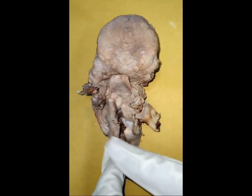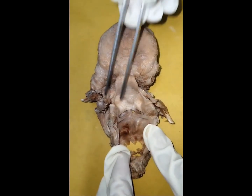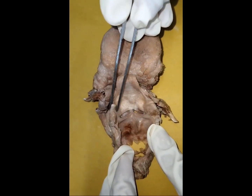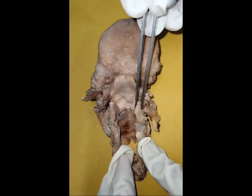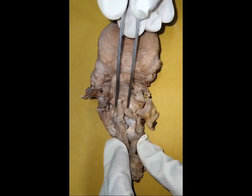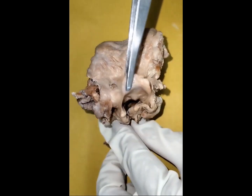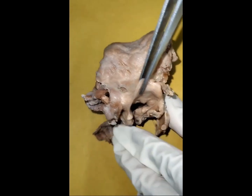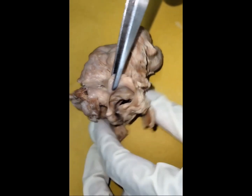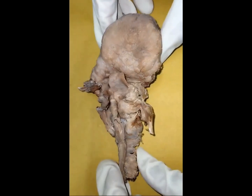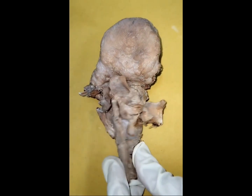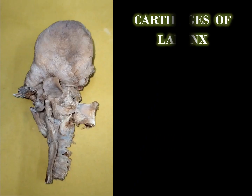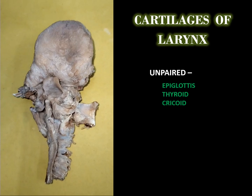From the posterior aspect, epiglottis, arytenoid, corniculate, and cuneiform cartilages are visible. Thyroid, cricoid, and most of the arytenoid cartilages are hyaline cartilages, whereas epiglottis, corniculate, and cuneiform cartilages are elastic in nature. A few cartilages are arranged in pairs and a few are unpaired. The unpaired cartilages are epiglottis, thyroid, and cricoid, which are present in the midline. Paired cartilages are arytenoid, corniculate, and cuneiform, which are seen on the posterior aspect in pairs.